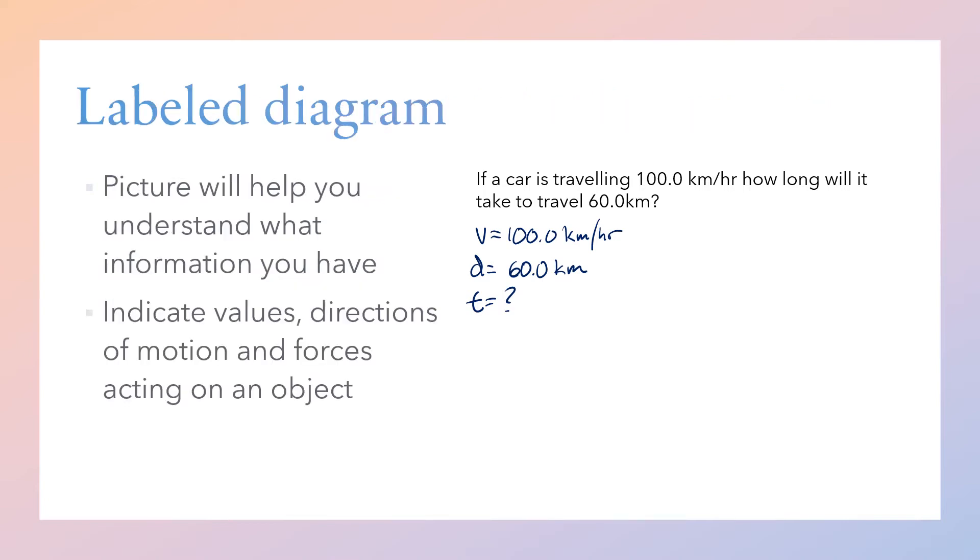Now we want to have a labeled diagram. For constant motion problems like this in one direction, the labeled diagram is not as important, but I'm going to do it anyway. The picture will help you understand what information you have. You should indicate values, directions, motion, and any forces acting on the object. Here's my car with an arrow showing it's going 100.0 kilometers per hour, and a distance of 60 kilometers. Don't need to be fancy drawings—I do lots of stick figures and boxes. Just make sure you understand what information you're working with.